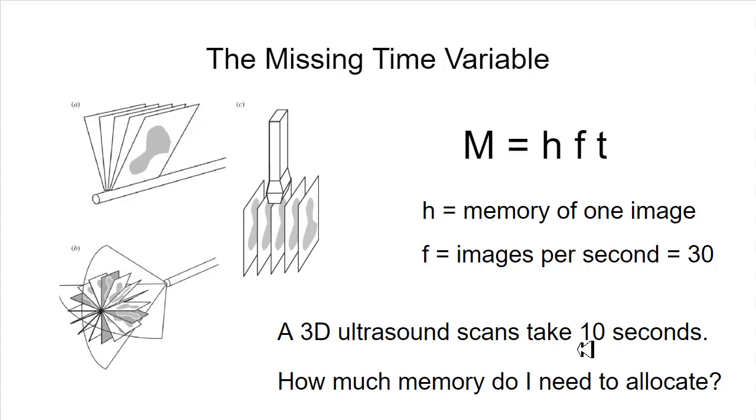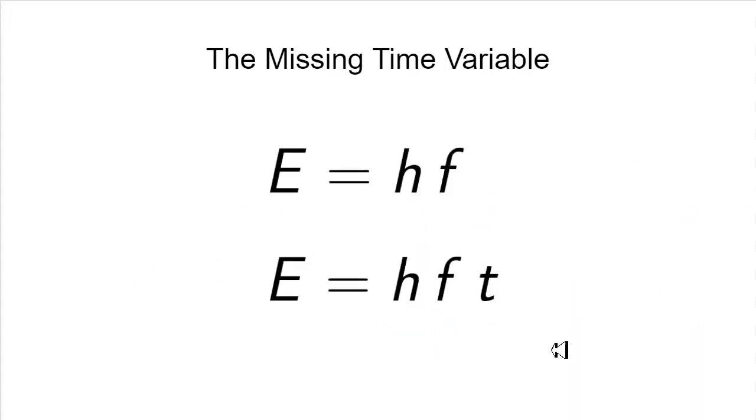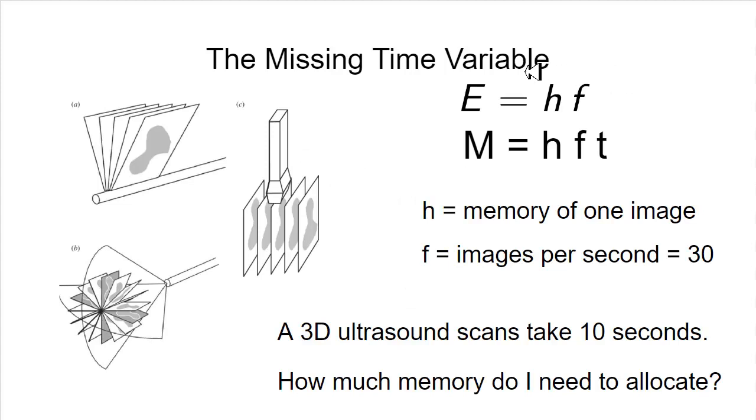That is what helped me to see the problem that I believe is going on here. Writing the equation like this and saying that this is the energy of a photon is analogous to me writing this equation and saying that this is the memory of one image. Now I think you can see how ridiculous that sounds, that this is the memory of one image.